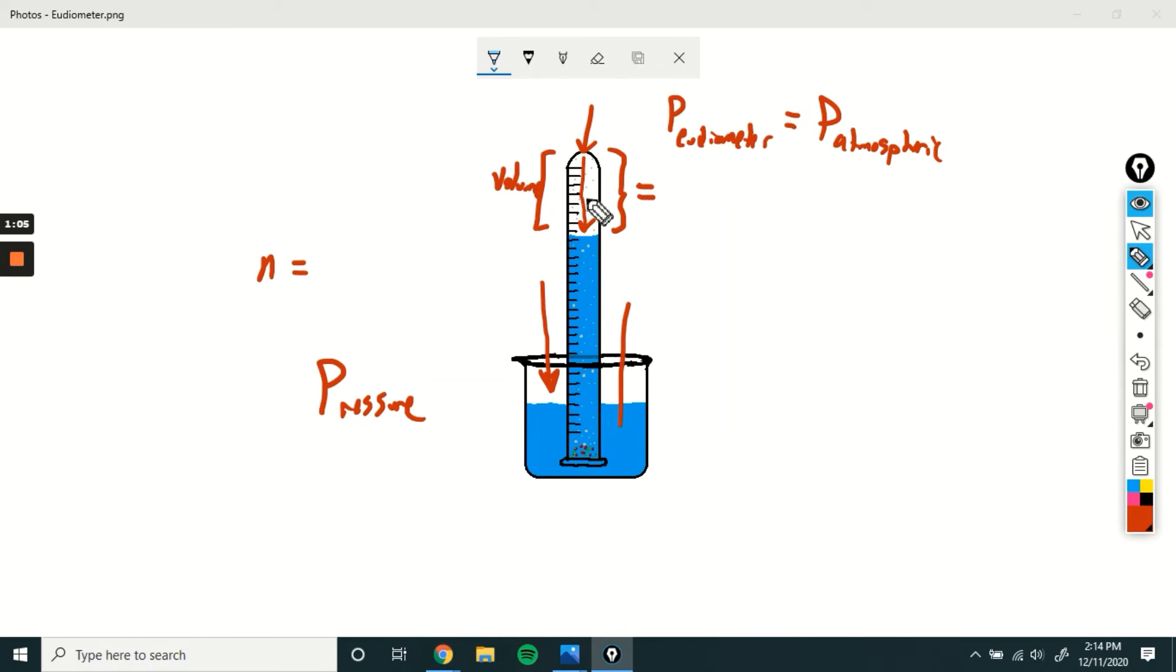So I don't have a device that I can stick in my eudiometer to determine the pressure, but we do have a device that can measure the pressure of the air in the room and that is going to be called a barometer. I don't know if I spelled that right. I think this might be an O. So a barometer helps us to measure pressure.